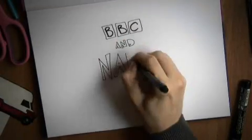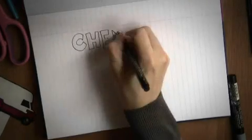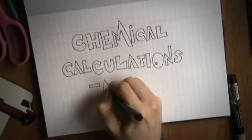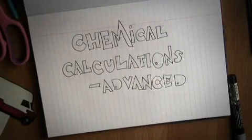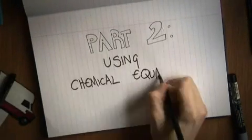This is BBC Bitesize with Chris Smith and Richard Van Orden. We're from The Naked Scientist. This podcast is all about the calculations that we use in chemistry. In part one we saw how to balance a chemical equation. Well now we're going to find out how to use them.